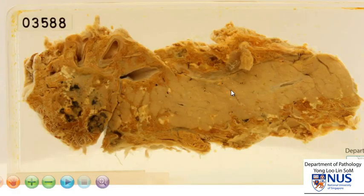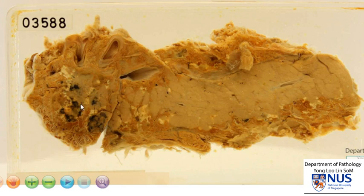To summarize, this is an example of acute pancreatitis. What we can appreciate are these areas of fat necrosis with saponification with chalky deposits. We can also see some areas of hemorrhage, which are likely due to elastase enzymes released from the damaged pancreatic acinar cells.